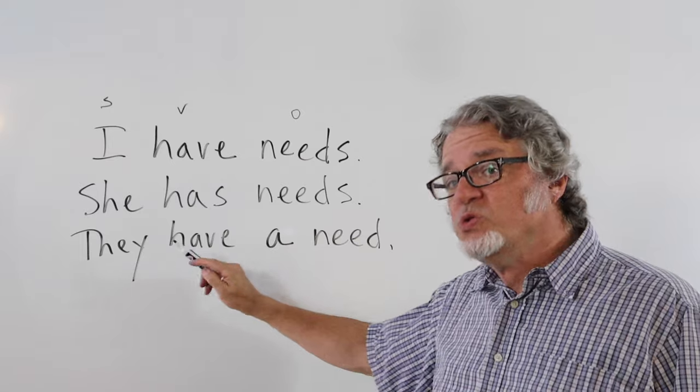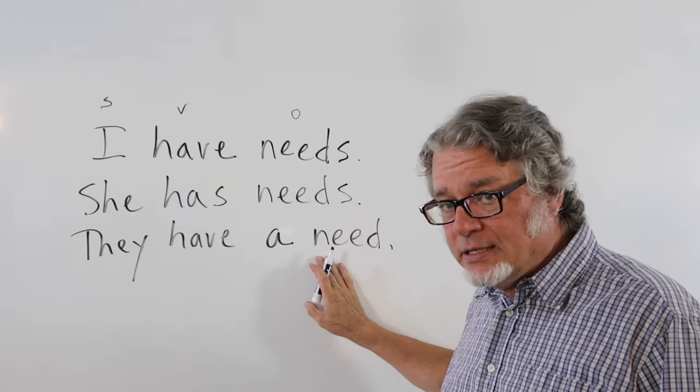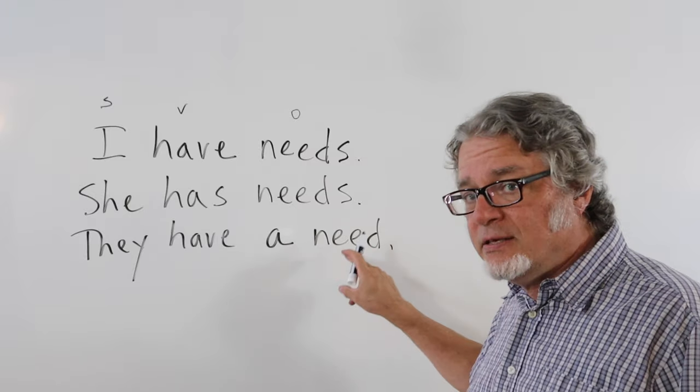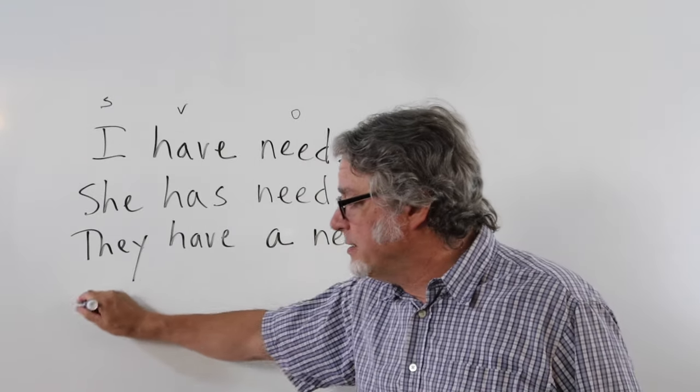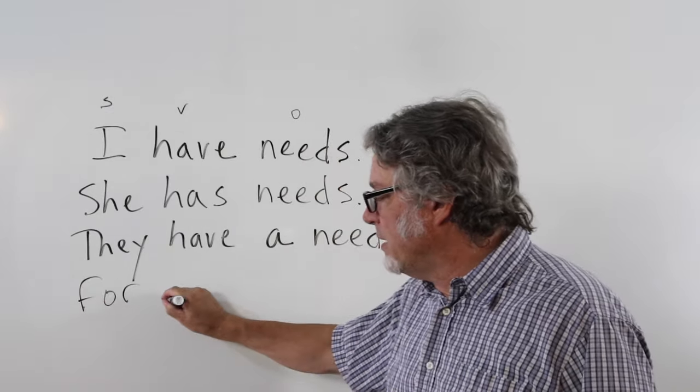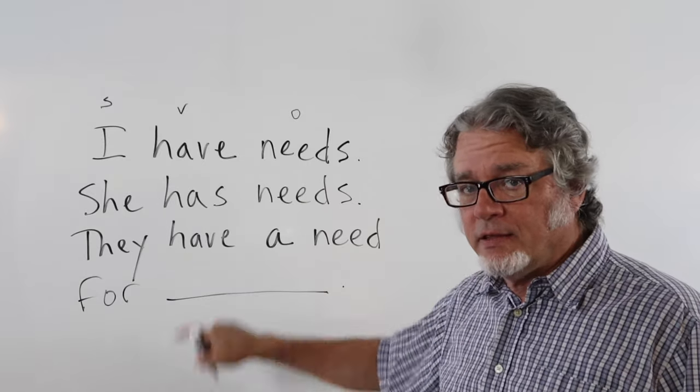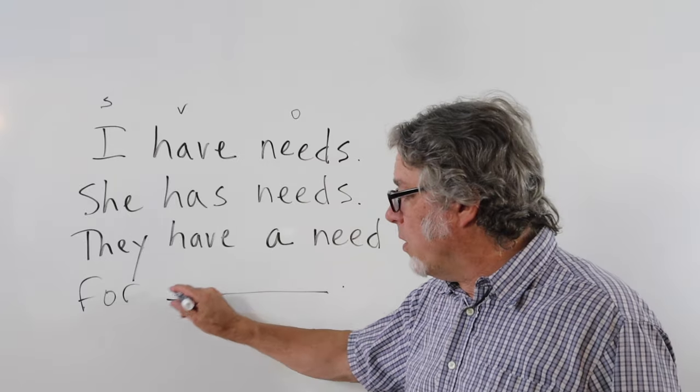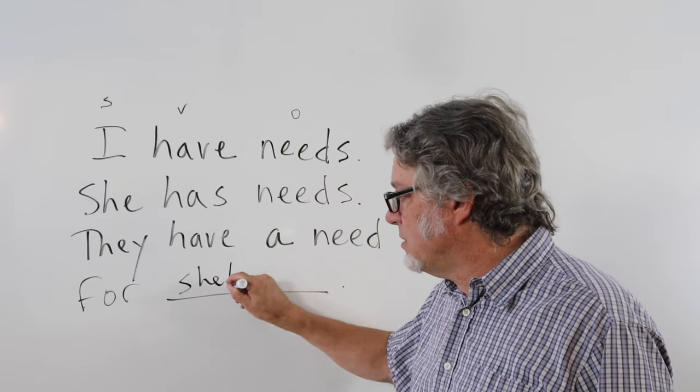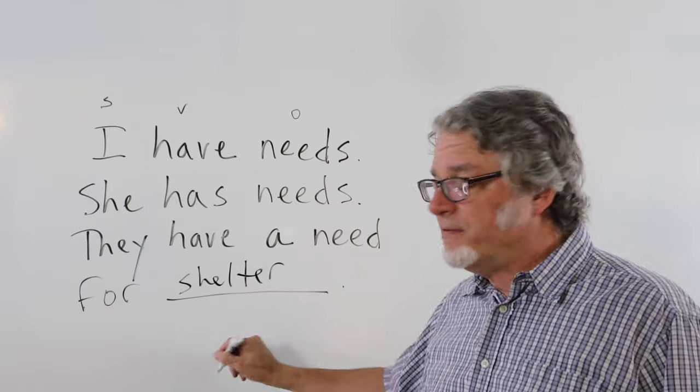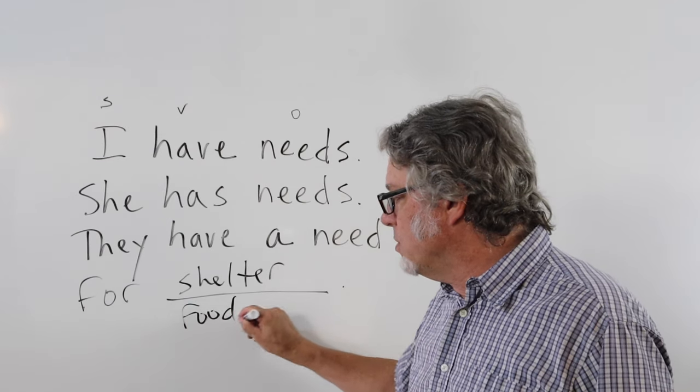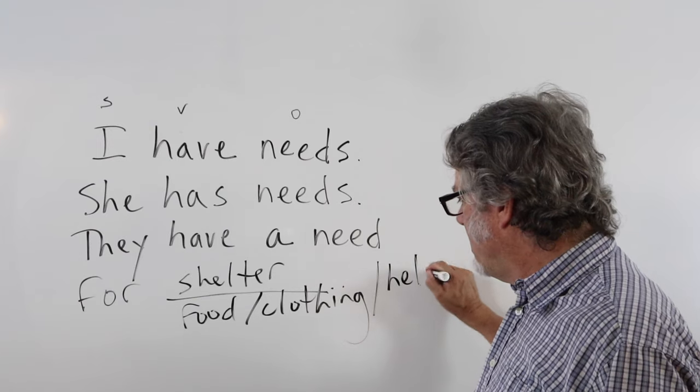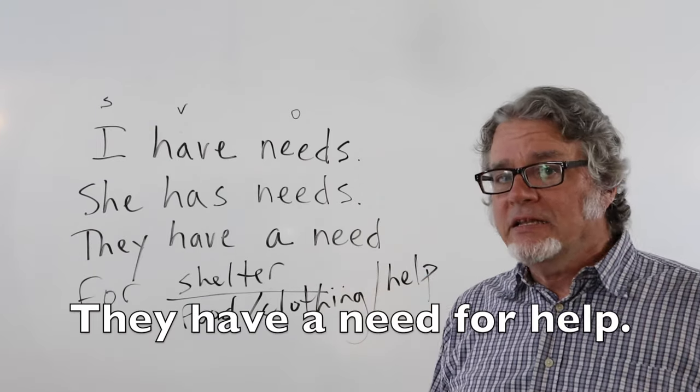You could also use the singular, they have a need, and you could add to this sentence, they have a need for, and then this is the thing that they might need. They have a need for shelter. They have a need for food, or clothing, or help. They have a need for help.